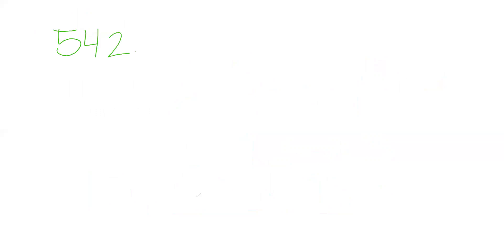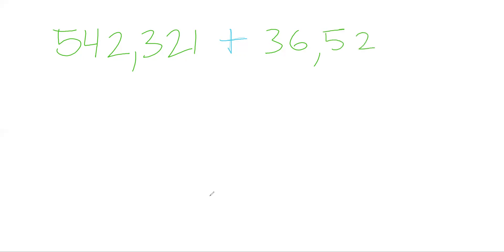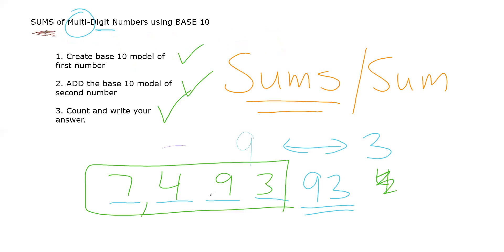Let's dive into our very first example. We're going to take 542,321 and add 36,522 to find the sum. Here's our first problem — multi-digit, here we go. Step one: we're going to create a base 10 model of our first number.